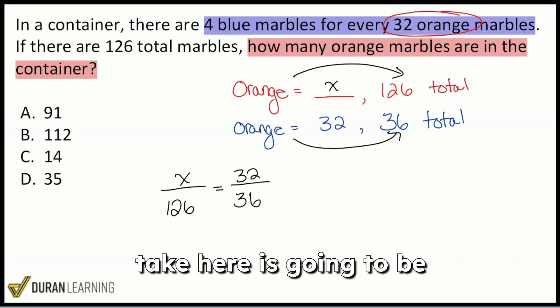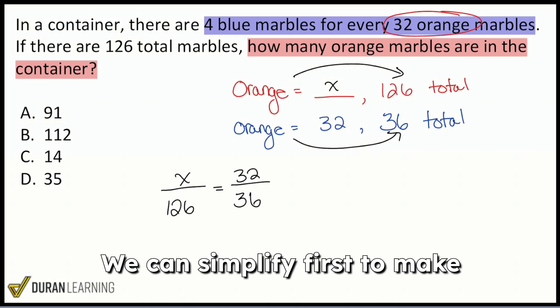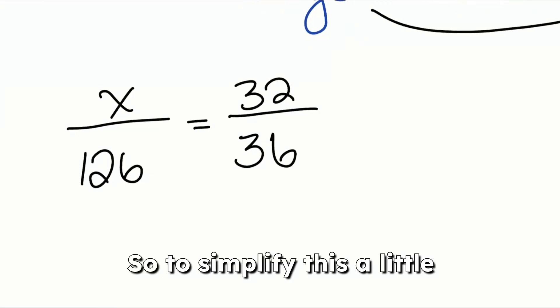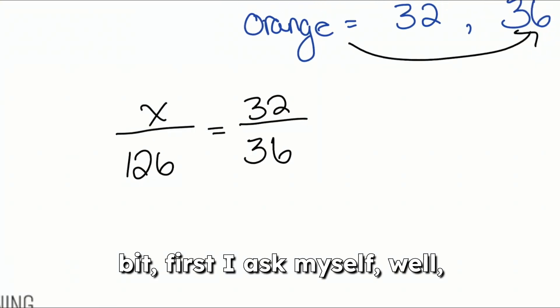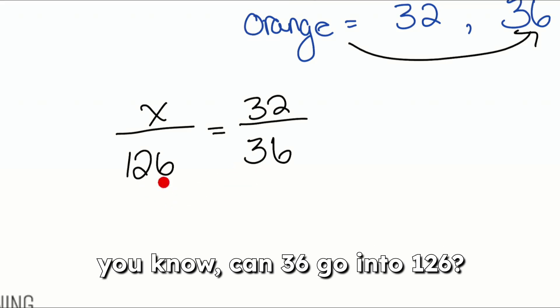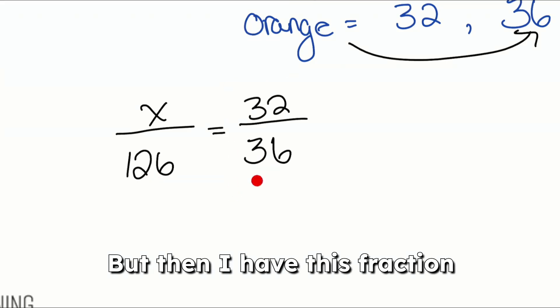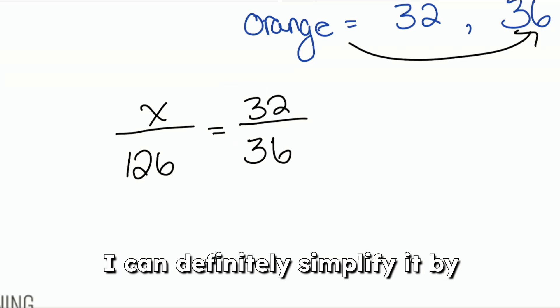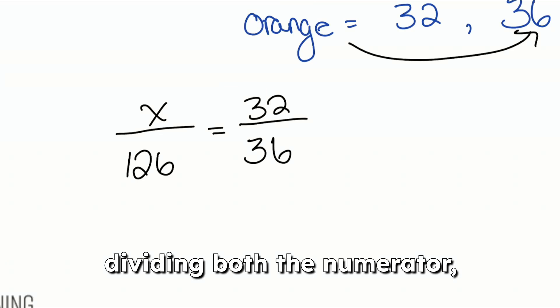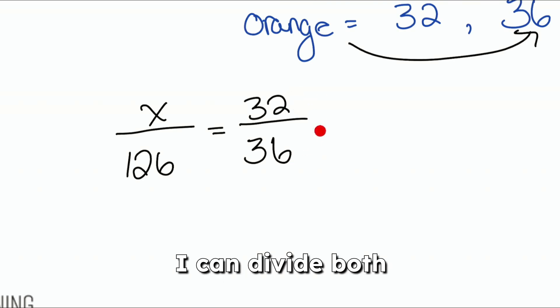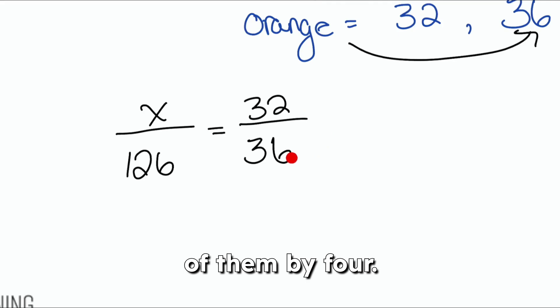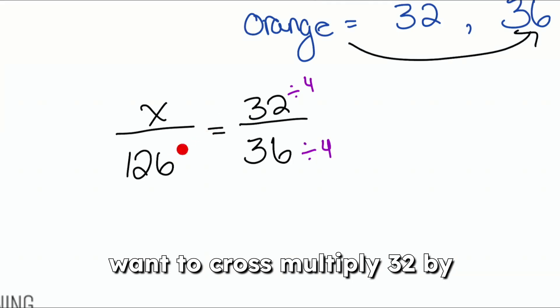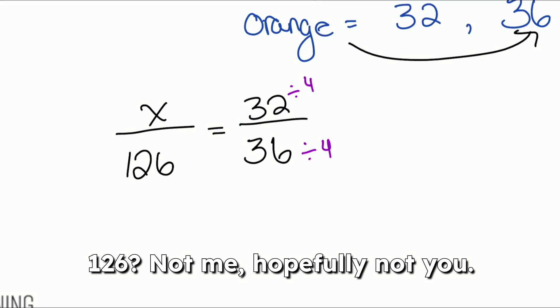The next step that we need to take here is going to be solving the proportion. We can simplify first to make our lives a little easier. And then from there, we can solve. So to simplify this a little bit, first I ask myself, well, can 36 go into 126? If it's not obvious, no worries. But then I have this fraction over here, 32 over 36, that I can definitely simplify. I can definitely simplify it by dividing both the numerator, the top, and the denominator, the bottom. I can divide both of them by four. So once I do that, to simplify the fraction, to give myself an easier time, because who the heck is going to want to cross multiply 32 by 126? Not me. Hopefully not you.